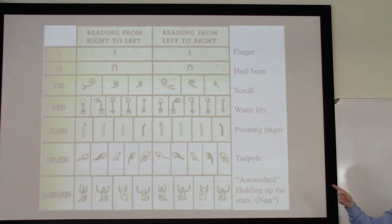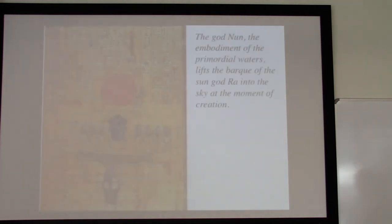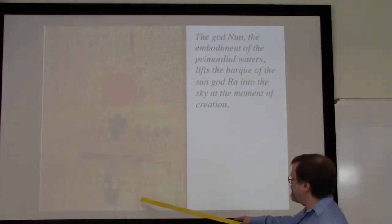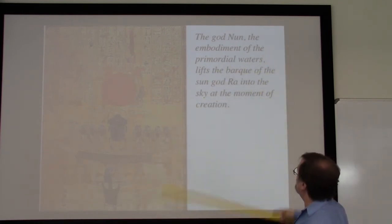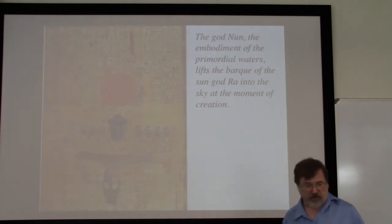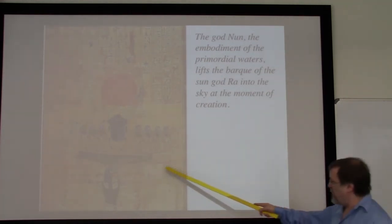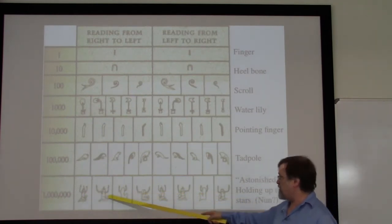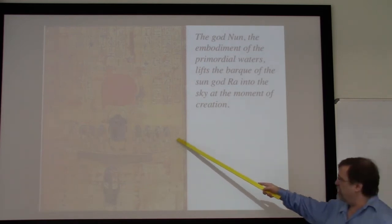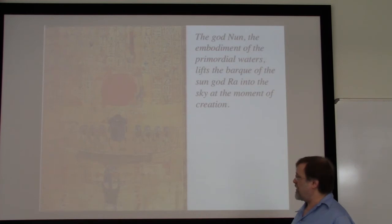It's possible that the god being represented there is the god Nun. Wikipedia suggests maybe it's Her, a different god. The reason I suggest Nun is because of a particular picture in Egyptian mythology: Nun, the god embodying the primordial waters, lifts the barge of the sun god Ra into the sky at the moment of creation. Both the sun and the scarab represent Ra, and Nun — one of the creator gods — is lifting him into the sky. I'd like you to look at the pose for this character and compare it with the pose used to represent one million.